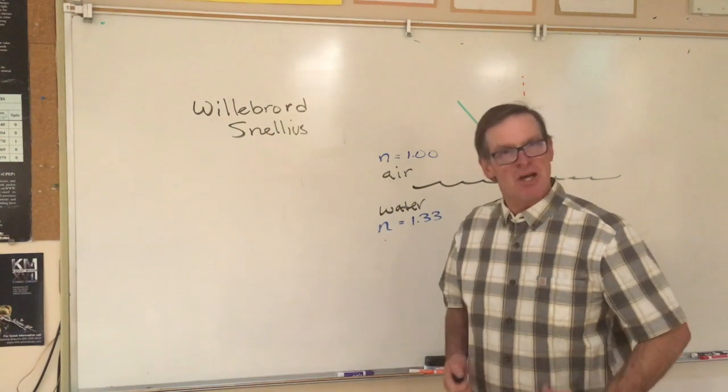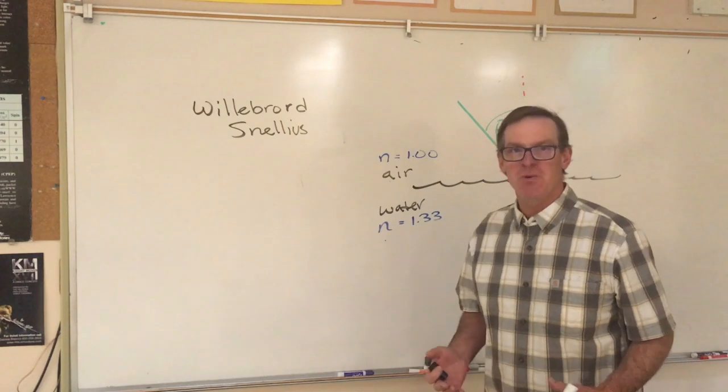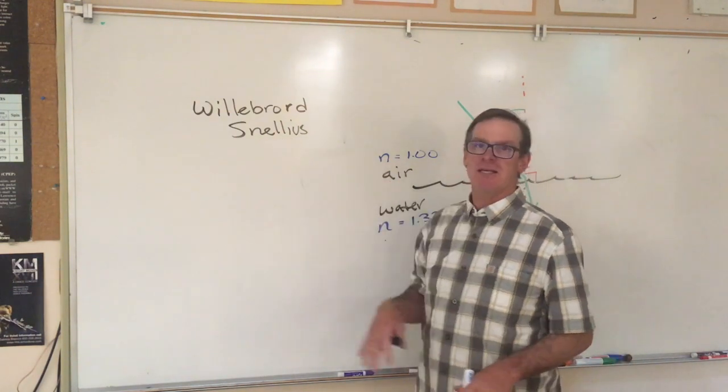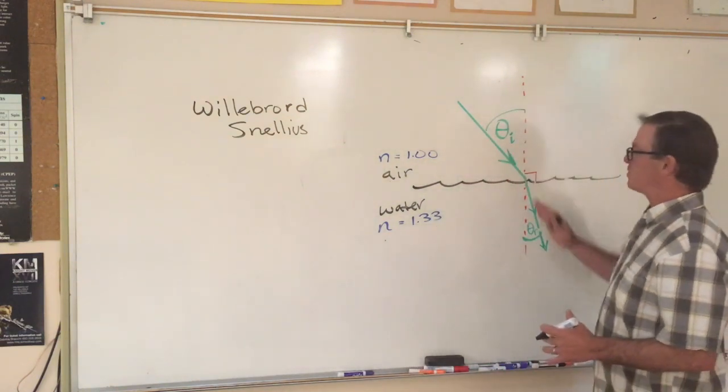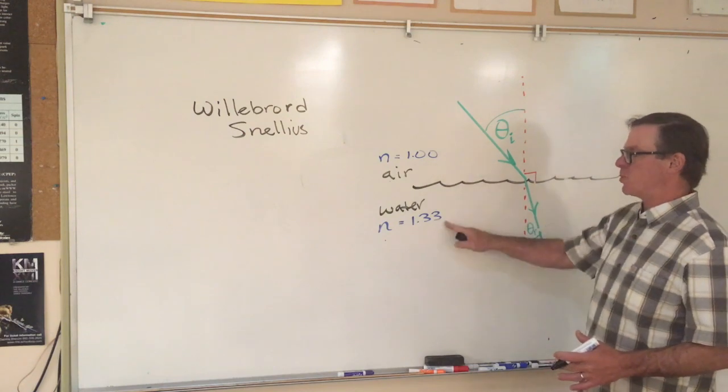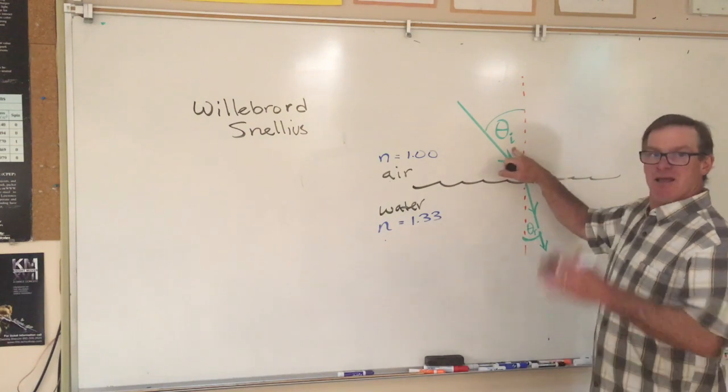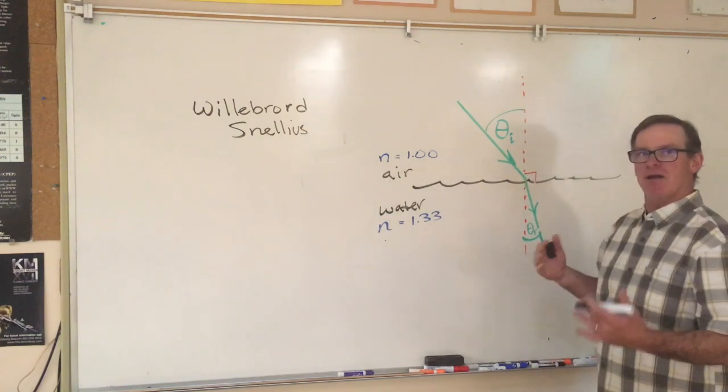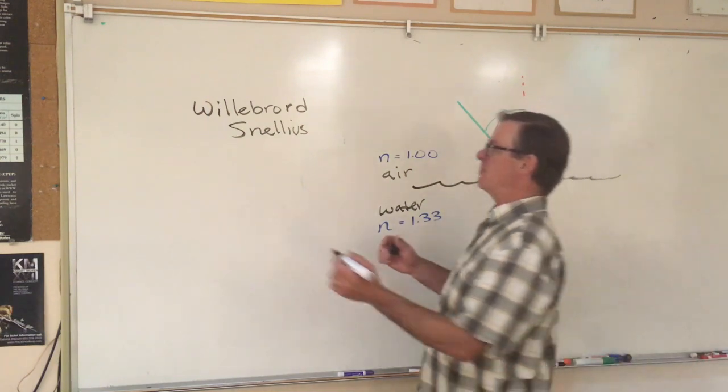Right around 1600, so 421 years ago or so, a man named Willebrord Snellius, who had an unfortunate name, developed a mathematical model to explain the relationship between the indices of refraction and these angles, theta i, the angle of incidence or incoming angle, and theta r, the angle of refraction or the refracted angle. And it's given the name Snell's Law, because his name is so painful to even pronounce.